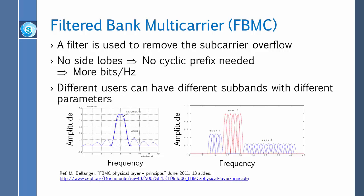The bank means a group of filters. But once you have done that, there are no side lobes. Basically no cyclic prefix is needed. Because you are not going to get any reflections, you can get more bits per hertz, and different users can have different subbands with different parameters.